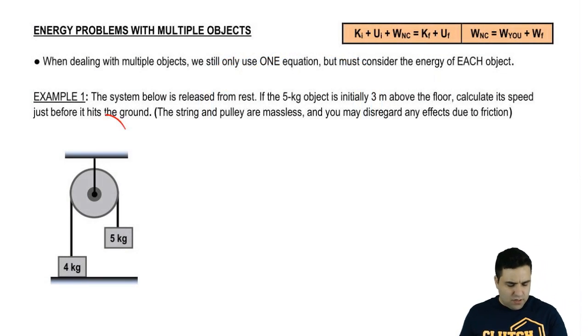So something like this here, we have multiple objects moving together. And it says here, when we're dealing with multiple objects, we'd still use only one equation. If you remember, when we did this with forces, F equals ma, if you had two objects, you would write F equals ma twice. Here, we're going to use just one equation, the big energy equation. But you have to consider the energy of each object individually, independently. So let's check it out.